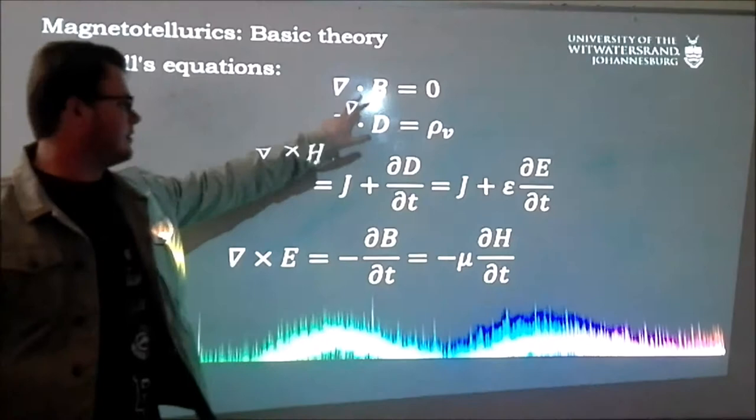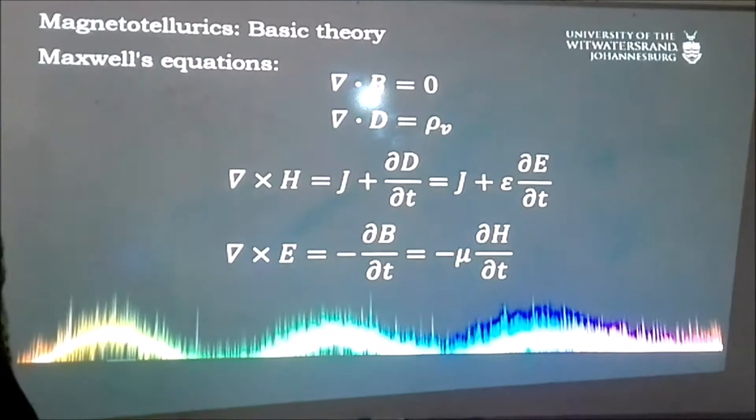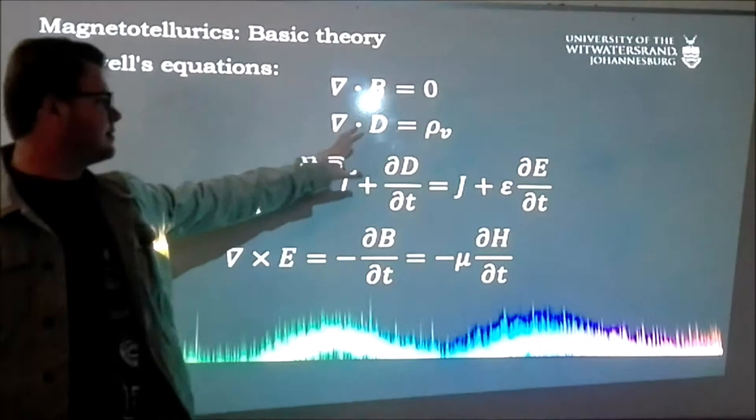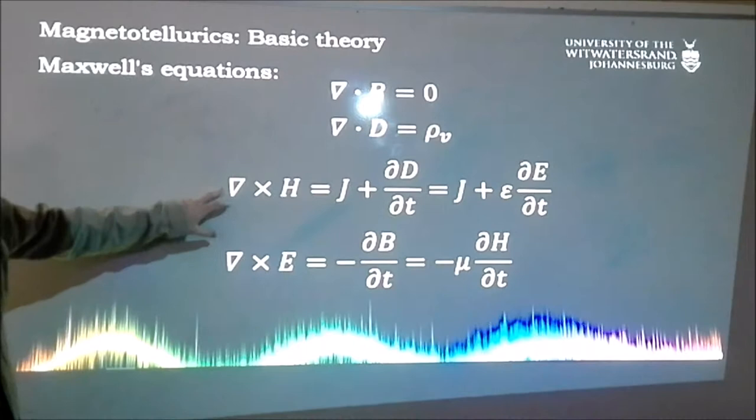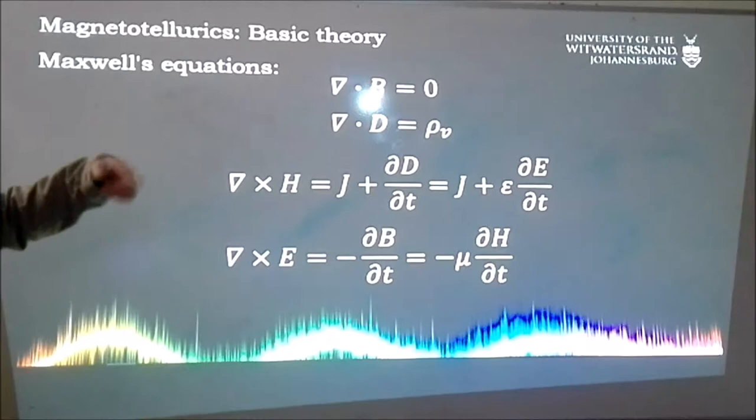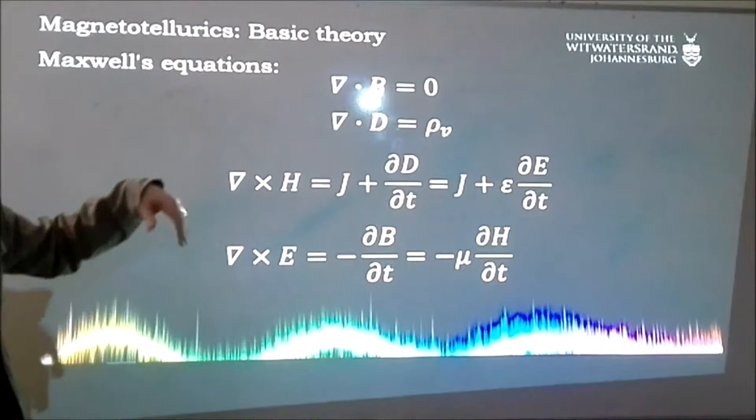Gauss's law is just saying that charges act as sources and sinks for electrical fields — this is the electric field flux density and that's the electric charge density. This is Ampere's law: moving current will induce a curling magnetic field around it. And this is Faraday's law — the one we're going to be using — it says that a moving magnetic field will induce current.